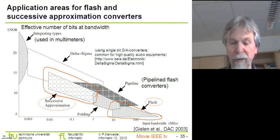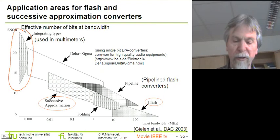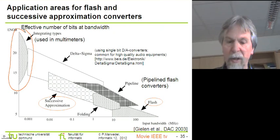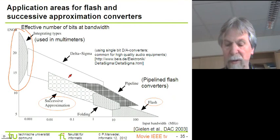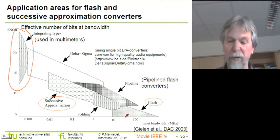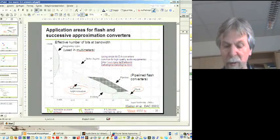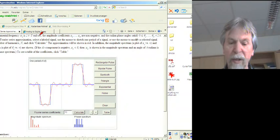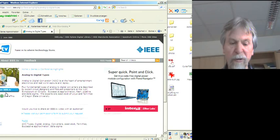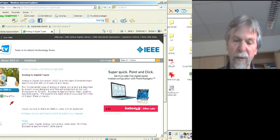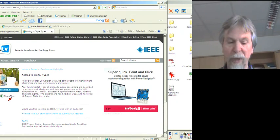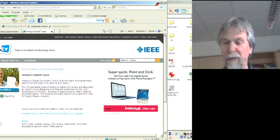You might have also used other converters. If you have used a multimeter for measuring voltages, you will probably have used integrating converters, where you can achieve an even higher resolution. There are also pipeline converters, which can be built from flash converters, and some other converters that convert voltages to time intervals and then measure those time intervals. There is a nice movie available from IEEE that provides some additional impression and explanation — it's freely available, but due to license restrictions I cannot add it to this recorded lecture.